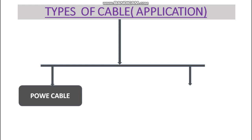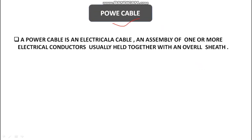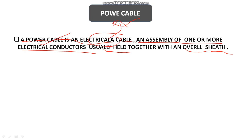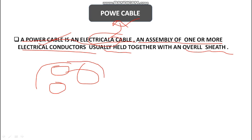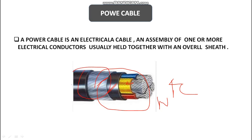Now let's come to the types of cable as per the application. There are two types: power cable and control cable. A power cable is an electrical cable — an assembly of one or more electrical conductors, usually held together with an overall sheath providing mechanical protection. As you can see, this is a four-core power cable with R, Y, B, and one neutral. Over it we have insulation, then the armor which gives mechanical protection, and again an overall sheath which can be PVC or XLPE.